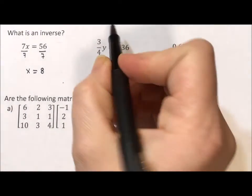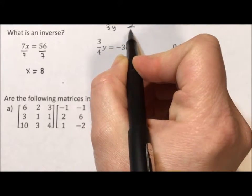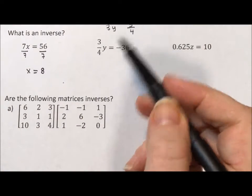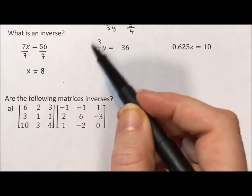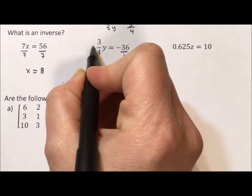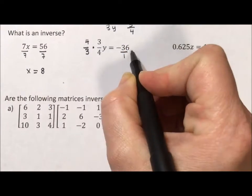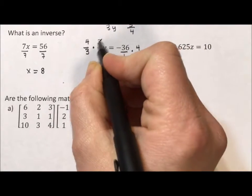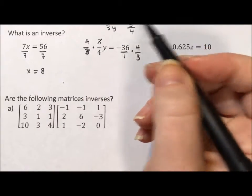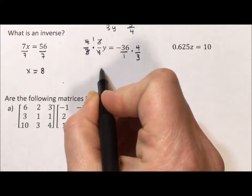Here we have 3/4y equals negative 36. We have y divided by 4 and multiplied by 3, two operations going on: multiplication and division. We could deal with them separately, multiply by 4 then divide by 3, or divide by 3 then multiply by 4. But with fractions, the beauty is we can do them both together. I can multiply by 4 and divide by 3 at the same time. The 3s are multiplicative inverses, so they reduce to 1, and the 4s reduce to 1. We end up with 1y.